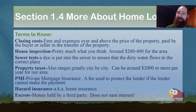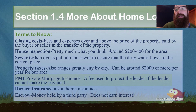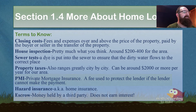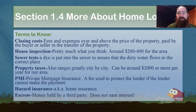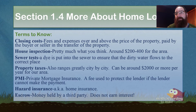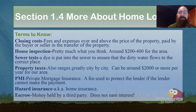Next up is PMI — private mortgage insurance. It's a fee to protect the lender if the borrower cannot make a payment. If you can put down 25% like in our earlier example, you don't have to pay PMI. However, if you cannot put down 20% of your loan amount, then you have to pay PMI.